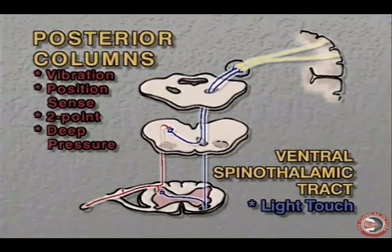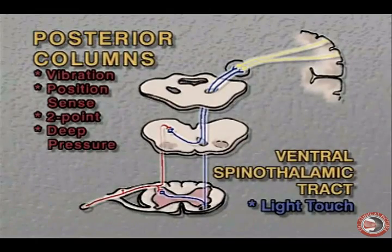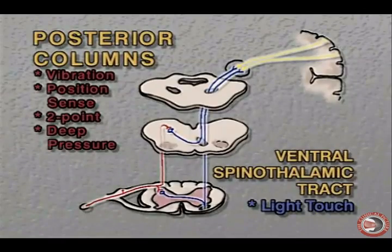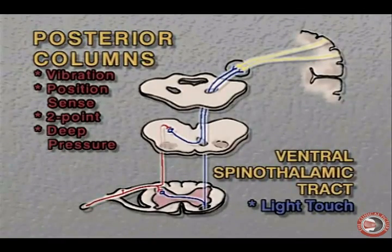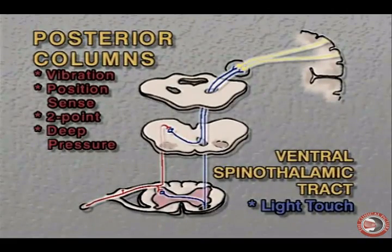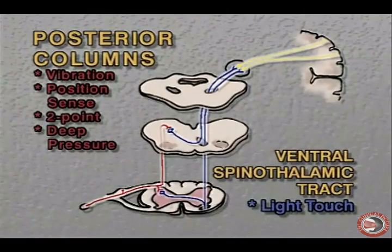We are checking for sensation of light touch and transmission through the ventral spinothalamic tract. The other ascending tract to evaluate is the posterior columns — the fasciculus gracilis and fasciculus cuneatus. The posterior columns transmit the sensations of vibration, deep pressure, position sense, two-point discrimination, and warm and cool.